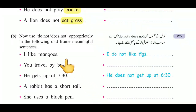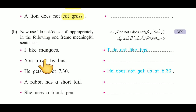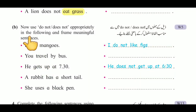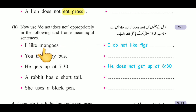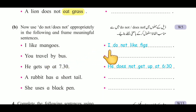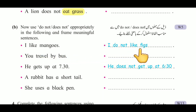In question B, it is the opposite — use 'do not' or 'does not' appropriately in the following sentences and frame meaningful sentences. اب اس میں do not یا does not add کرکے بامعنی جملہ بنانا ہے۔ For example: 'I like mangoes' — add 'do not' to get 'I do not like figs.' مجھے انجیر پسند نہیں ہے۔ In the same way, complete the remaining sentences.